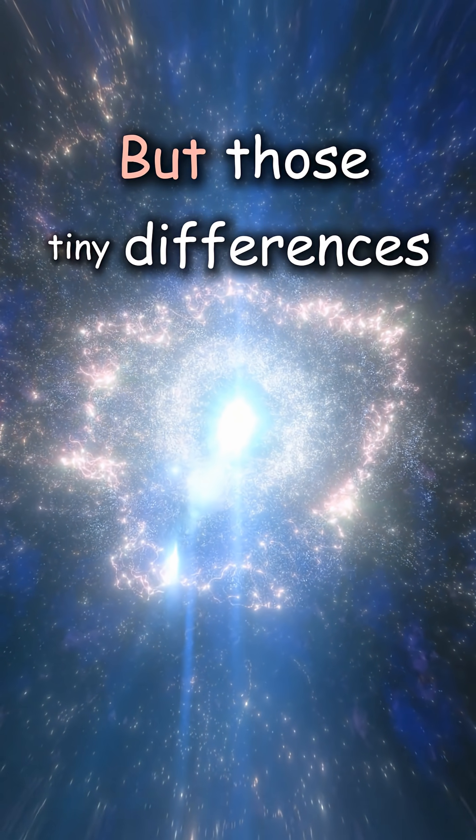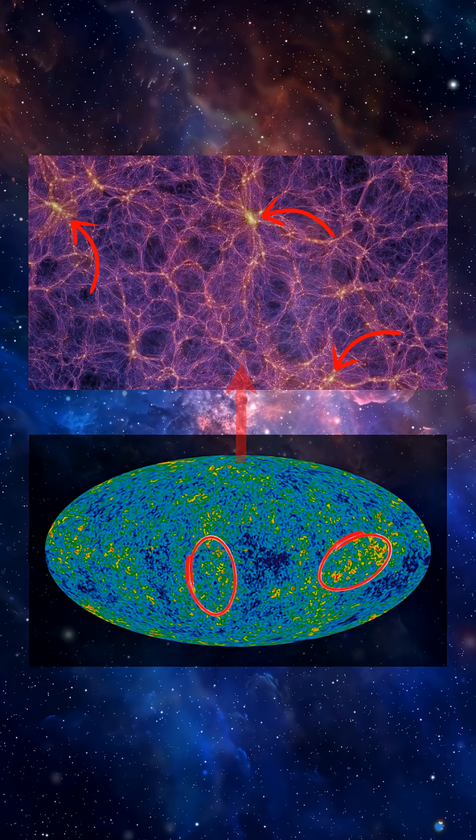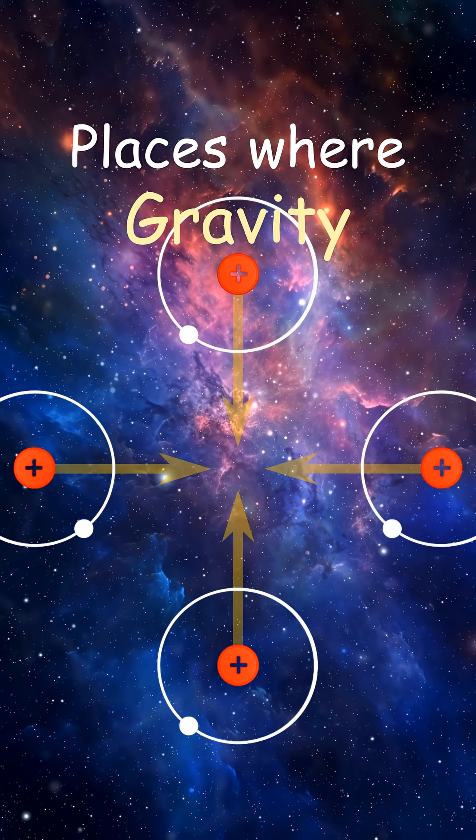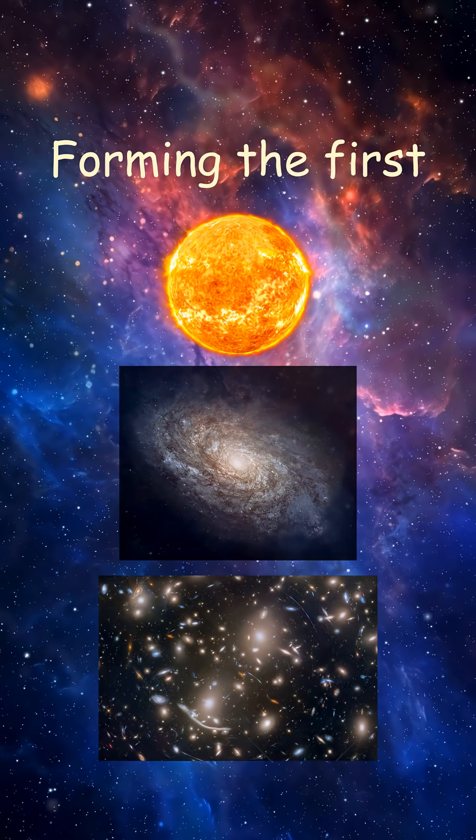But those tiny differences were everything. They marked where the universe was just a little denser, places where gravity would slowly pull matter together, forming the first stars, galaxies, and clusters.